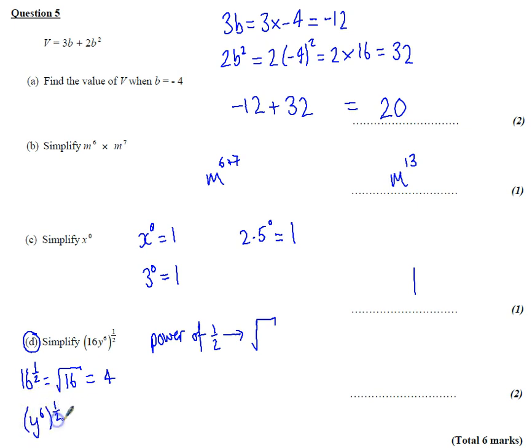What times by itself gives us y to the power of 6? Or you can think of it as when you find the power of a power, you multiply them, so 6 times 1/2 is 3. So put those back together, we've got 4y cubed.